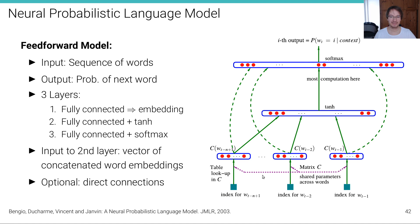There is also a small variation of this model with direct connections from the first layer to the last layer. The word embeddings are concatenated and input to the second layer, and the output of the model is the probability of the next word.